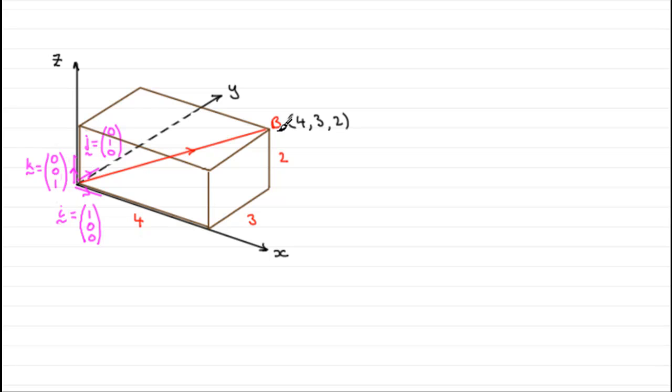And the position vector of B, written as either B or O to B, well that is going to be 4 in the i direction, followed by 3 in the j direction, followed by 2 in the k direction. So you can see that the values that we use in the vector are exactly the same values that we have as the coordinate. We could also write O to B as a column vector, and that would be (4, 3, 2).